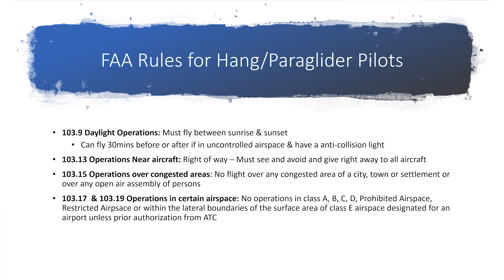The next one is operations near aircraft. You must see and avoid other aircraft and give way to them. It also says you are responsible for making sure you're flying somewhere that won't put you in conflict with an aircraft. 103.15 is operations over congested areas — we're not allowed to fly over a congested area in the vicinity of a city, town, settlement, or over any open-air assembly of persons, like a rodeo or a concert.